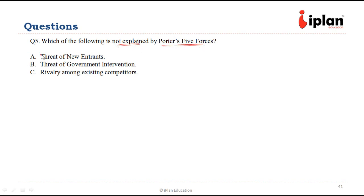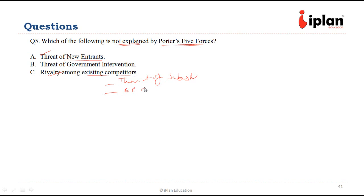Question number five says: which of the following is not explained by Porter's Five Forces? The five forces are: threat of new entrants, rivalry among existing competitors, threat of substitute products, bargaining power of buyers, and bargaining power of suppliers. The threat of government intervention is not one of Porter's Five Forces, so B is the right answer.